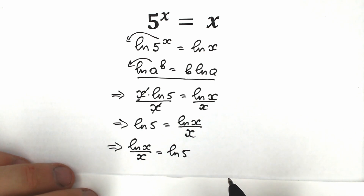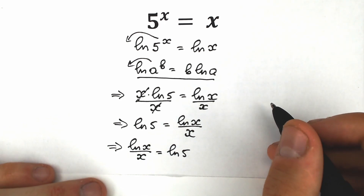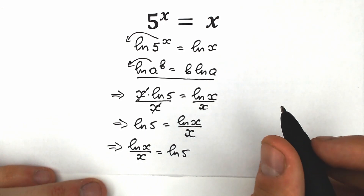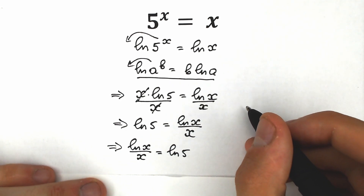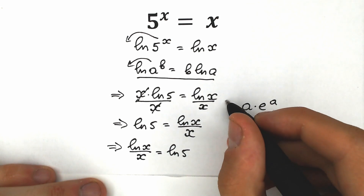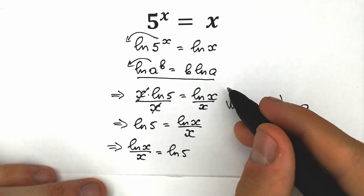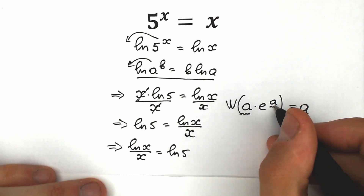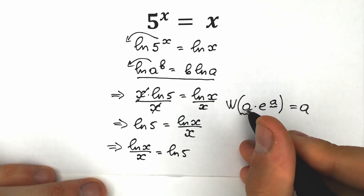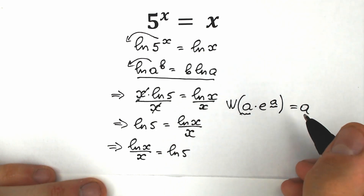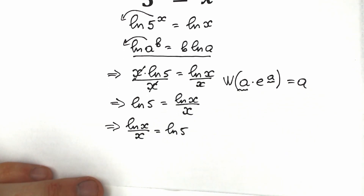Now we need to understand the Lambert W function — a really important function in math. A lot of students don't know how to evaluate expressions with this function, so I'll explain it simply. If we have an expression like a times e to the power a, when we apply the Lambert W function to it, we get only a. We need the same expression appearing both as the multiplier and as the exponent of e. So let's try to create that Lambert W form on the left side.